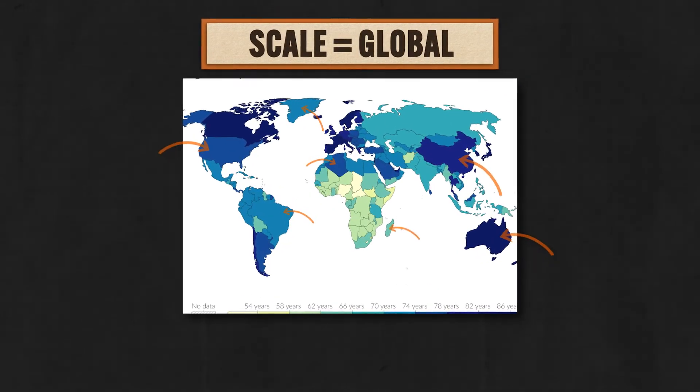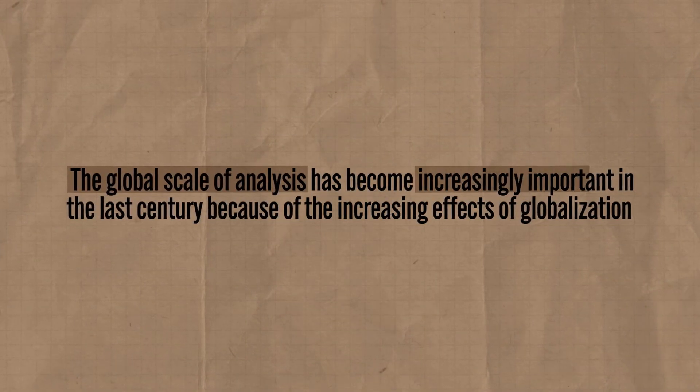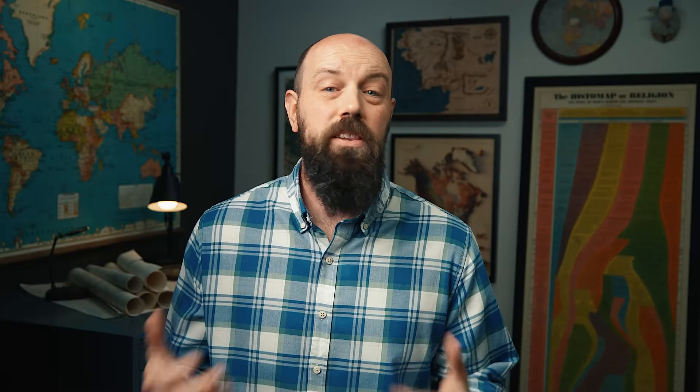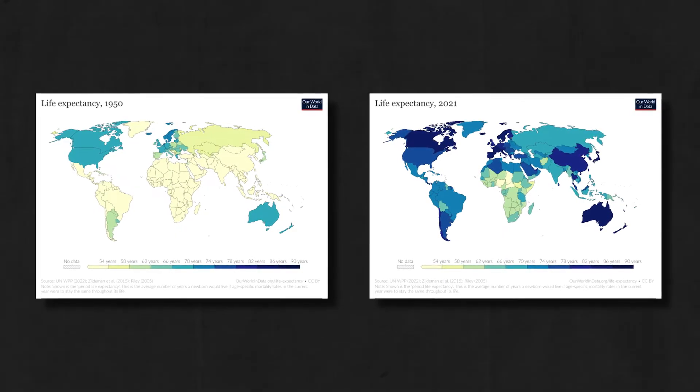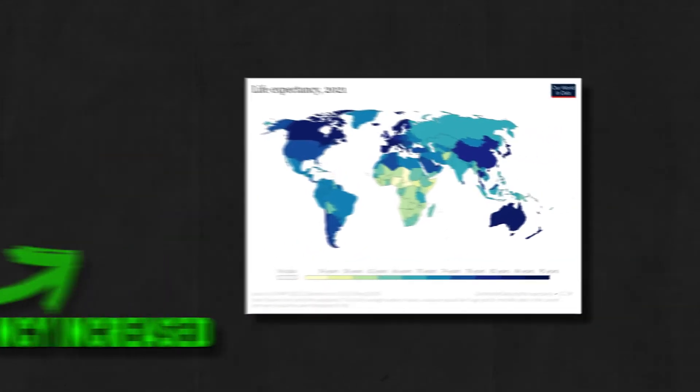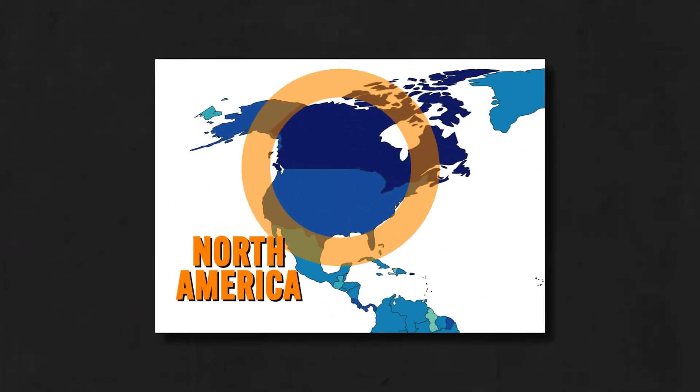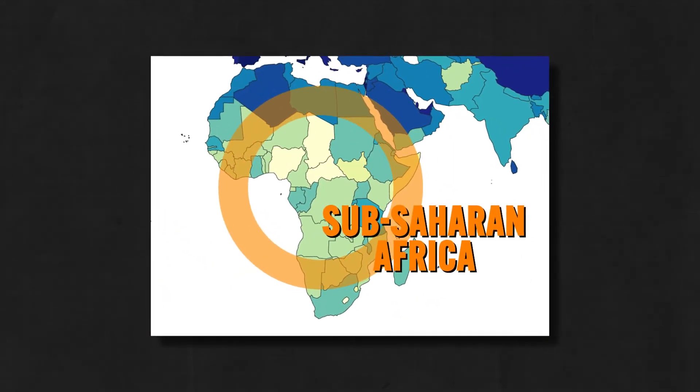Suppose we wanted to understand life expectancy at various scales. Here you can see a map of the world — the scale of the map is global, but with all those countries colored in, the scale of analysis is national. We want to start by considering this data at the global scale: how does life expectancy look across the whole world? The global scale has become increasingly important in the last century because of globalization — meaning the world and its people are becoming increasingly connected through communication technologies like the internet and transportation technologies like commercial airplanes. Comparing a global map of life expectancy from 1950 to one from 2021, we can see that at a global scale, life expectancy has increased basically everywhere. But at a regional scale, North America shows people living pretty long lives compared to sub-Saharan Africa, where they live significantly shorter lives.